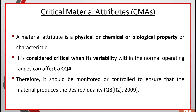Coming to the second factor that affects critical quality attributes — that is CMA, critical material attribute. A material attribute is a physical, chemical, or biological property or characteristic. It is considered critical when any variation within the normal operating range can affect the CQA. Therefore, it should be monitored and controlled to ensure that the material produces the desired quality.